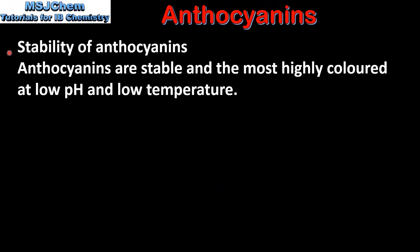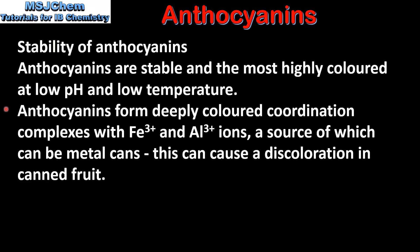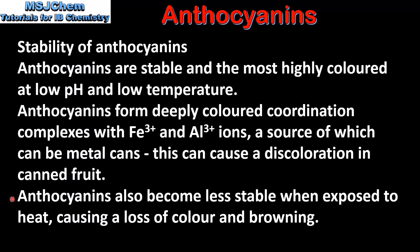Finally, we look at the stability of anthocyanins. Anthocyanins are most stable and most highly coloured at low pH and low temperature. Anthocyanins form deeply coloured coordination complexes with Fe³⁺ and Al³⁺ ions, a source of which can be metal cans. This can cause discolouration in canned fruit. Anthocyanins also become less stable when exposed to heat, causing a loss of colour and browning.